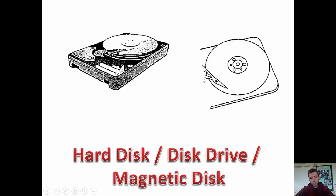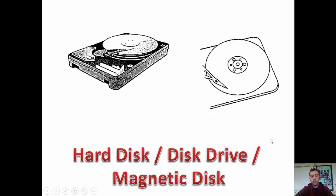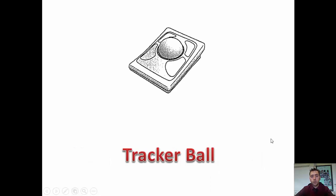If you see one that looks like it's got a scalpel on it, it's representing a hard drive — also called a disk drive or magnetic disk; they're all the same thing. An arm moves across and reads data on the metal disks, which is magnetic. It's called a hard drive because it's metal.